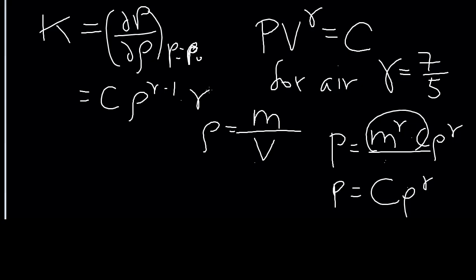And of course then, this part we can re-express as P over density times gamma to give us k. And so we can then work out for air...